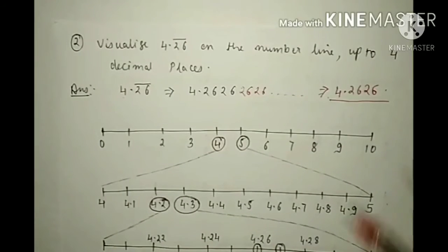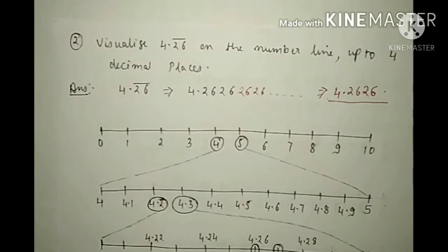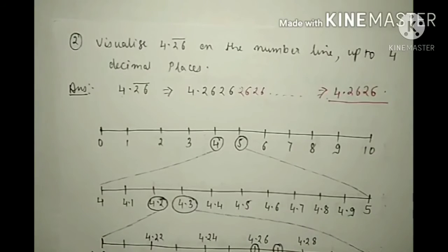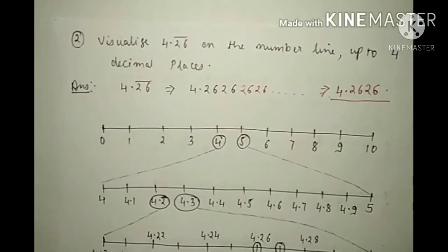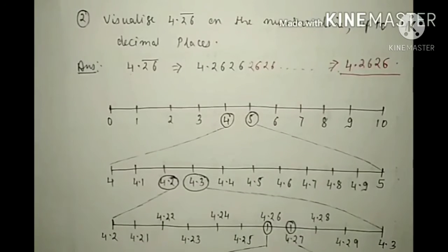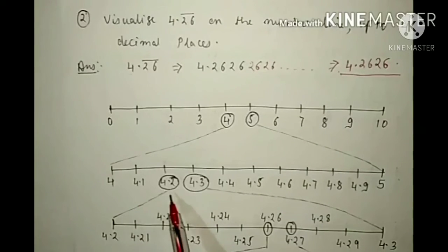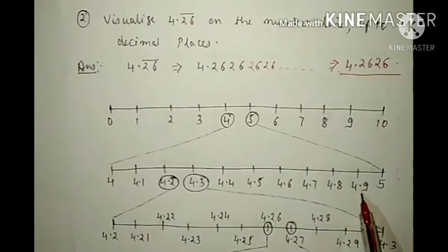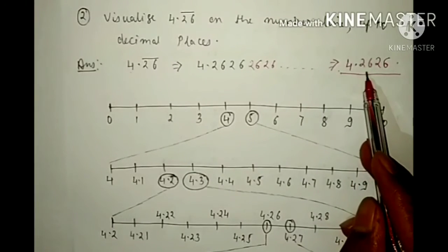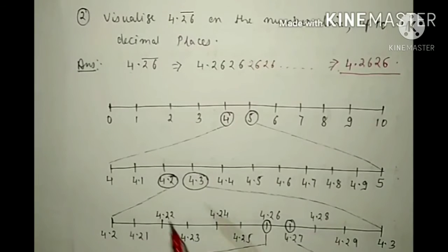This number is greater than 4 and less than 5, so again make the number line from 0 to 10 and mark 4 and 5. Then make another number line below, writing 4 in the left corner and 5 in the right corner. The middle numbers will be 4.1, 4.2, and so on till 4.9. Our number is greater than 4.2 but less than 4.3, so mark 4.2 and 4.3.